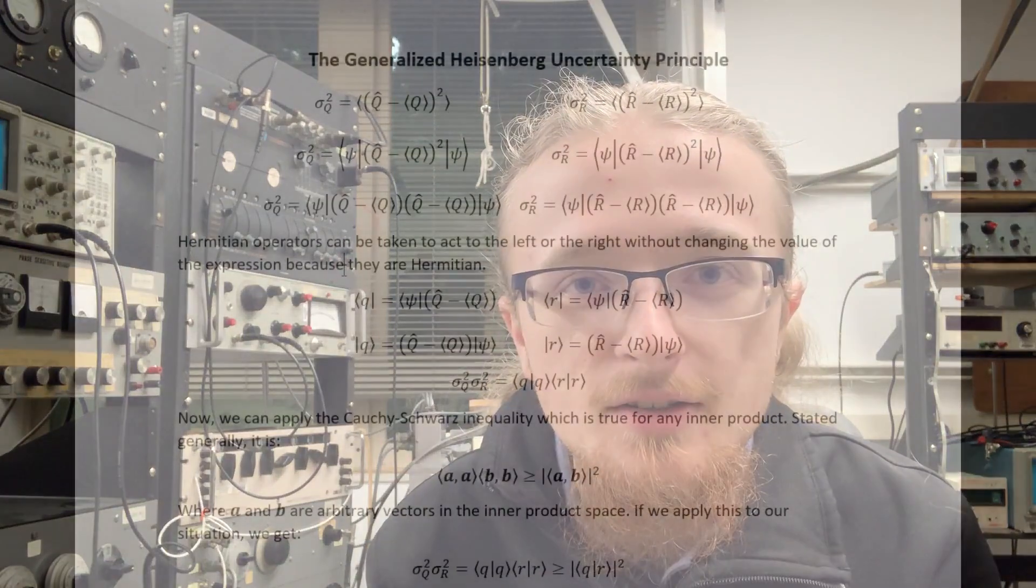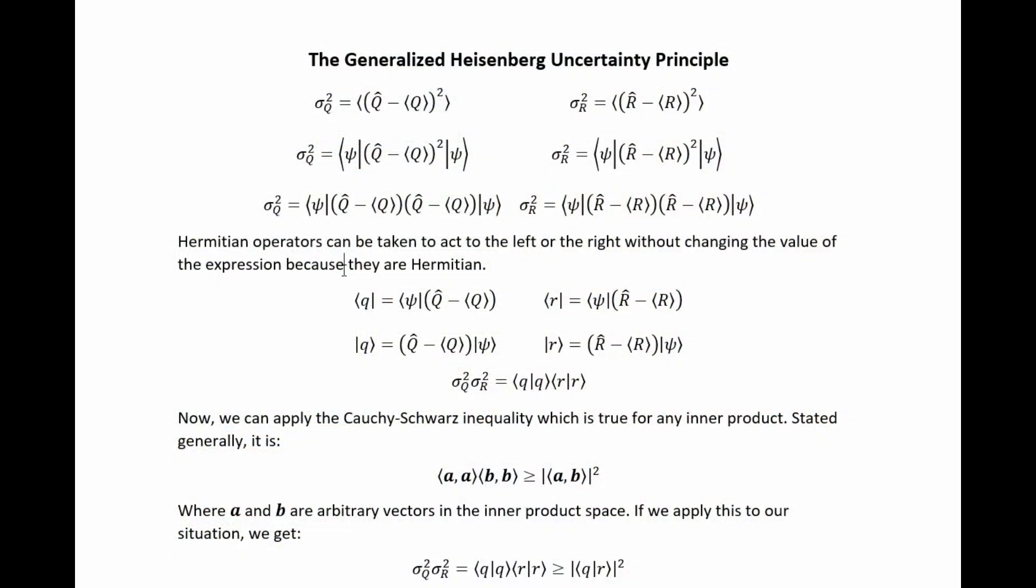Anyway, here follows the math section. It is now time to begin the dramatic and stunning calculation of the generalized Heisenberg uncertainty principle. Unsurprisingly, the first step is to write out the definition of uncertainties.